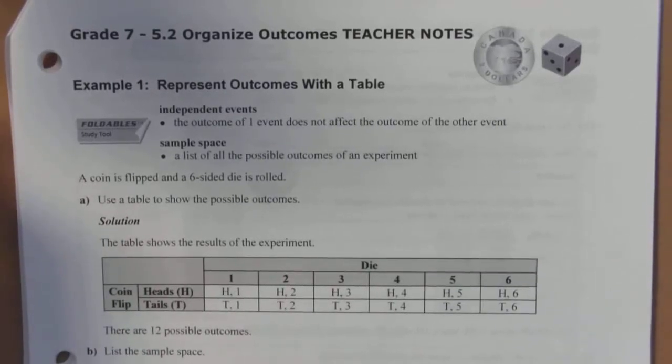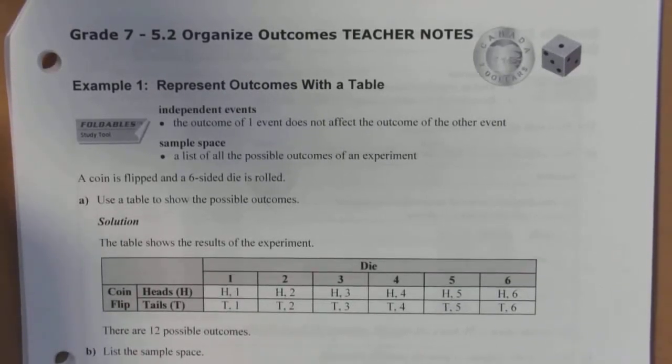All right, Grade 7, today we're looking at 5.2, Organized Outcomes, and we're going to start with an example.